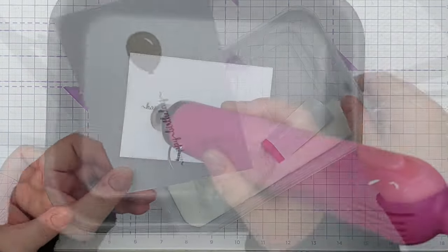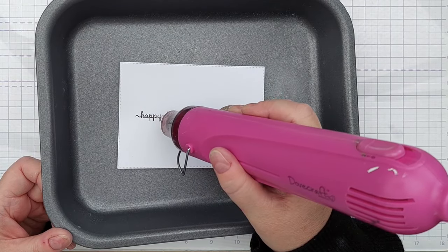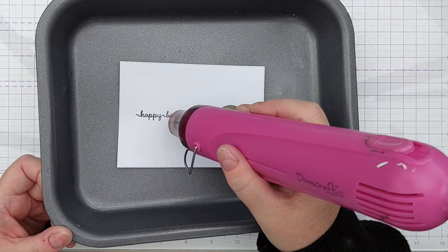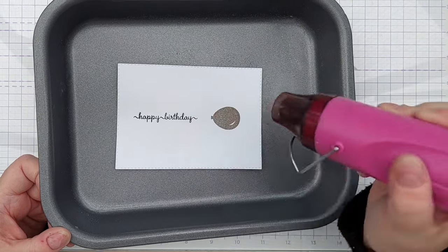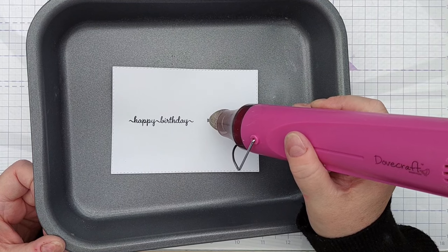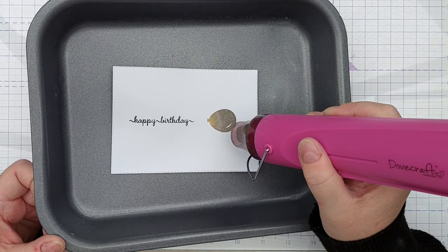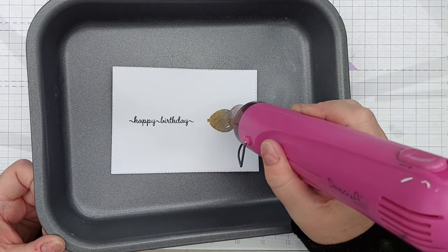When I want black embossing I use black ink and clear embossing powder because I have yet to find a black embossing powder that does as good a job as that. Once I put the embossing powder on these stamped images I heated it with my heat tool to melt them.